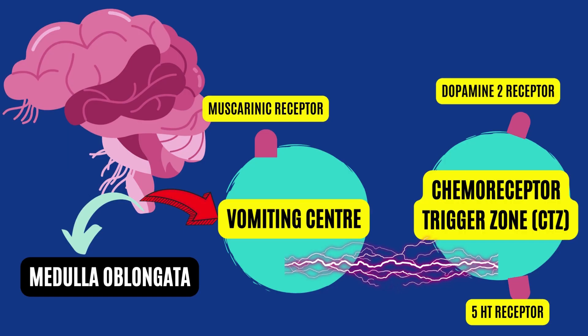The whole mechanism is guided and controlled by the brain and its vomiting center. The vomiting center is located in the fourth ventricle of the brain. The chemoreceptor trigger zone, also known as the CTZ, is a region on the floor of the fourth ventricle. The CTZ is responsible for stimulating the vomiting center.